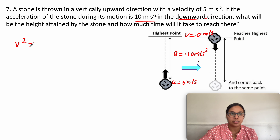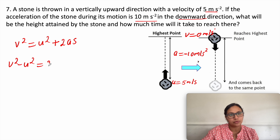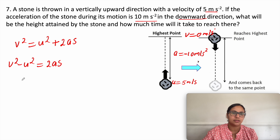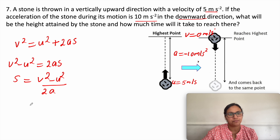We have the equation v² = u² + 2as, which gives v² - u² = 2as. Rearranging, s = (v² - u²) / (2a).